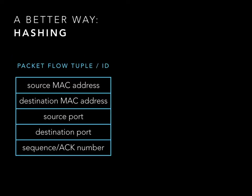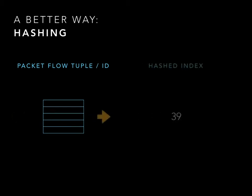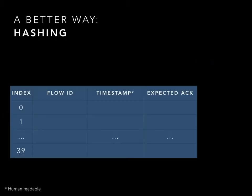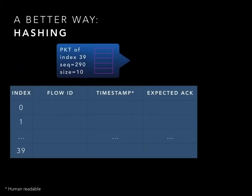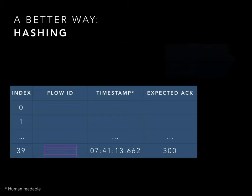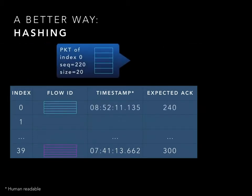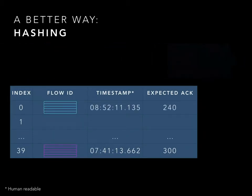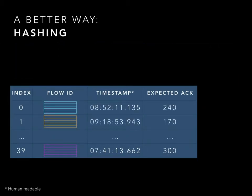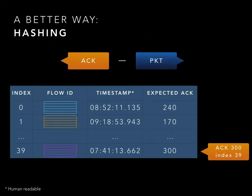Hash tables, on the other hand, provide an efficient storage mechanism for the identifiers and timestamps, while still allowing for out-of-order access to the packets. In this implementation, the keys are the flow tuples of the packets and acknowledgements. Incoming packets are hashed and inserted into the appropriate index along with the timestamp of arrival. When the acknowledgement packet arrives, it too is hashed and its timestamp is subtracted by the stored one, producing the RTT. The entry at this index is then removed.